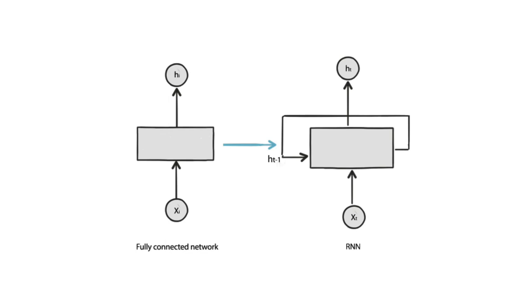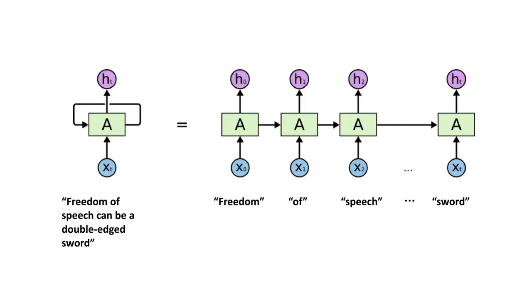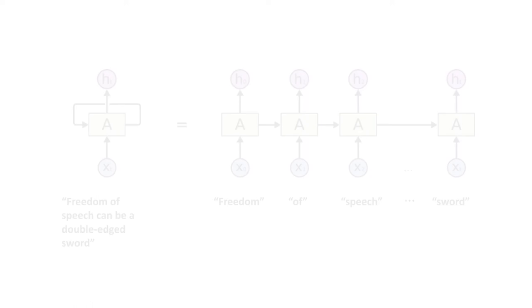Our first model is RNN, where instead of just passing the input through layers, it has an additional loop which acts as a memory to keep track of the text. The words are input one at a time in sequence before being processed and transformed by the algorithm to give an output.